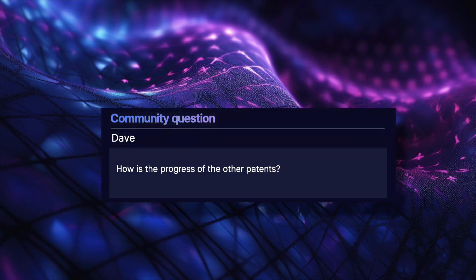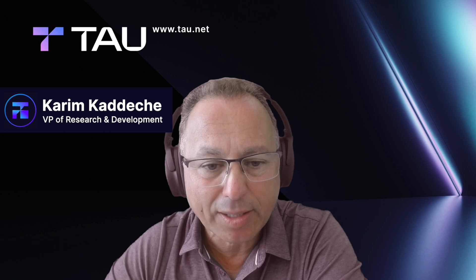The next question is from Dave: how is the progress of the other patents? We have been filing some patents around the Tau language and other implementations. We have recently filed two related patents — basically the same patent — both with the USPTO and with the European Patent Office. Those applications are just fresh in; obviously they haven't been examined by either patent office yet, but they will soon enough.